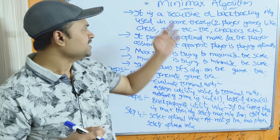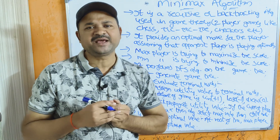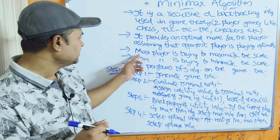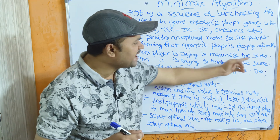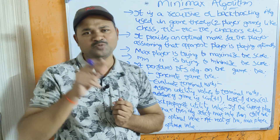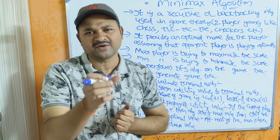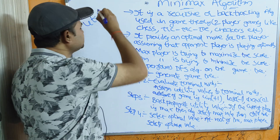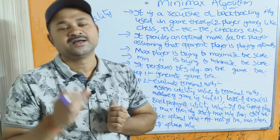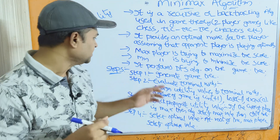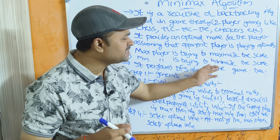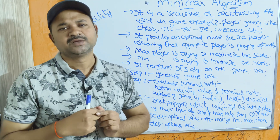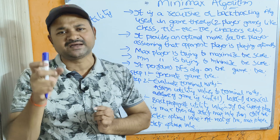In these games we have two players: the Max player and the Min player. Each node in the game tree has a utility value. The Max player always selects the maximum value to maximize the score, while the Min player always selects the minimum value to minimize the score.